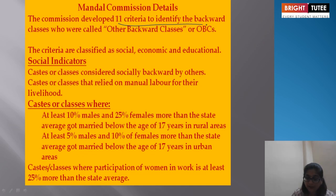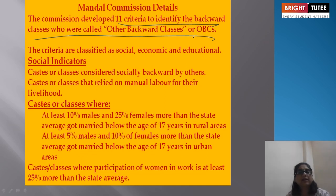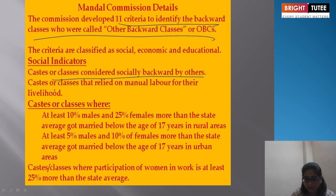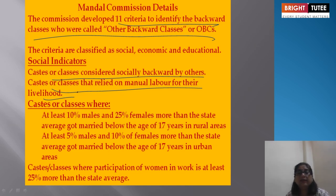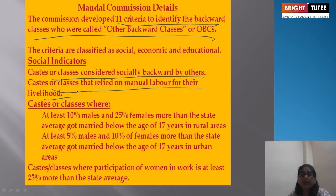The Mandal Commission developed 11 criteria to identify the backward classes versus other backward classes. The criteria are classified as social, economic, and educational. Social indicators include: castes or classes considered socially backward by others; castes or classes that relied on manual labour for their livelihood; castes or classes where at least 25 percent more females than the state average got married below the age of 17 in urban areas; and castes or classes where participation in local governance is at least 25 percent more than the state average.